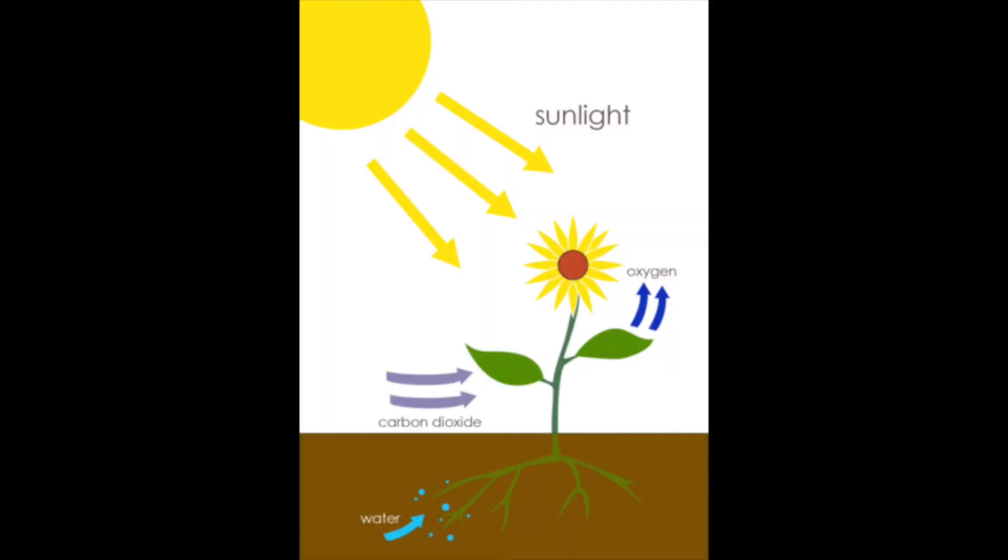So where does photosynthesis actually happen? Well, the light energy is absorbed by chlorophyll, and this is a green substance that fills chloroplasts.